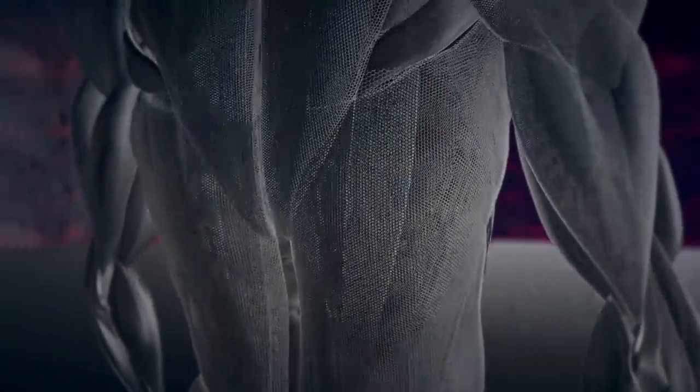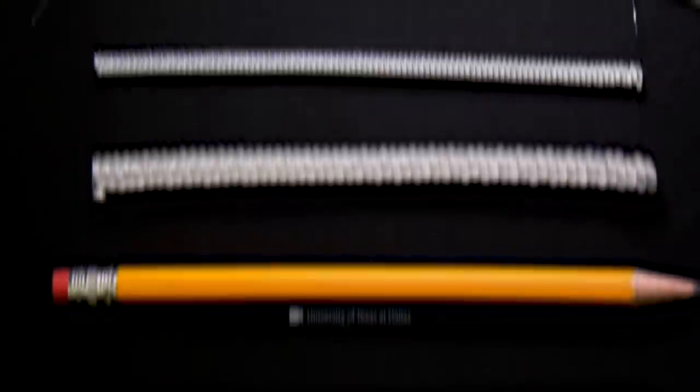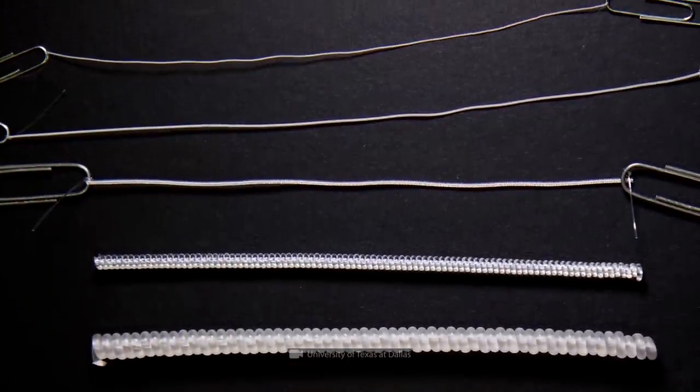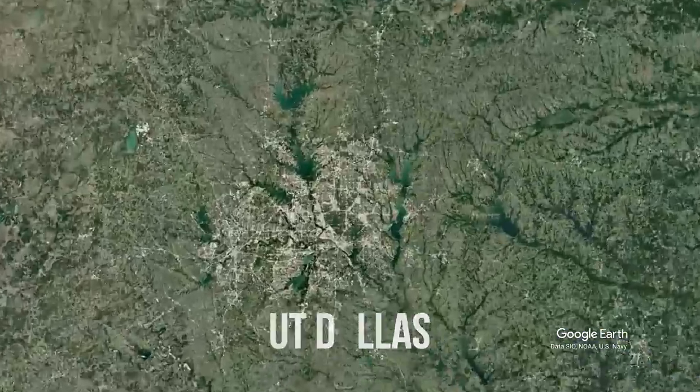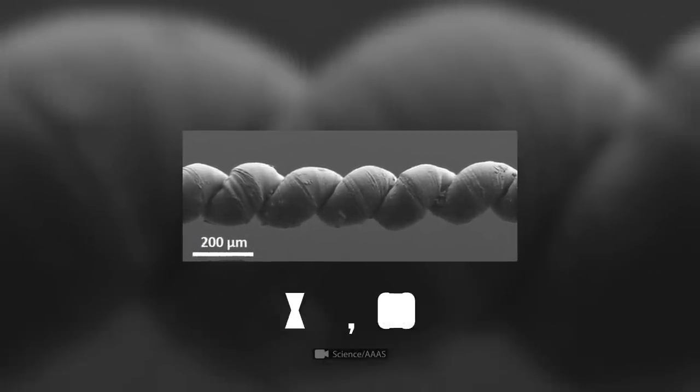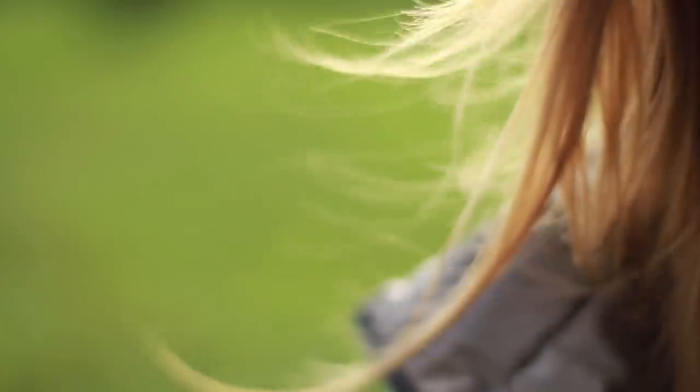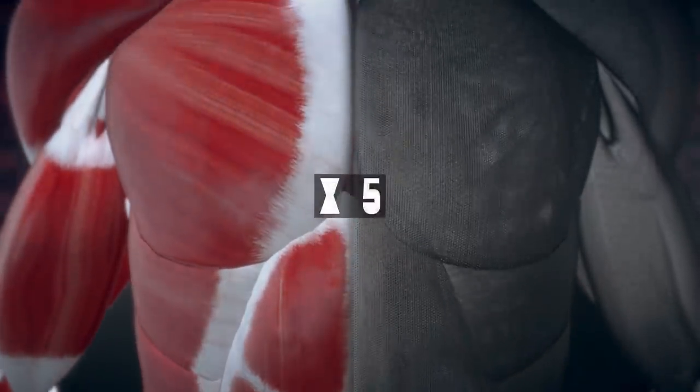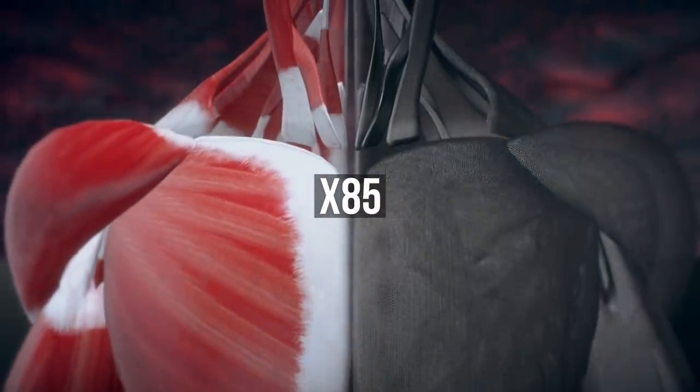What about artificial muscles? Some were developed by an international team of scientists from the University of Texas at Dallas. They're made up of nanotubes 10,000 times thinner than a human hair and 85 times stronger than natural muscles.